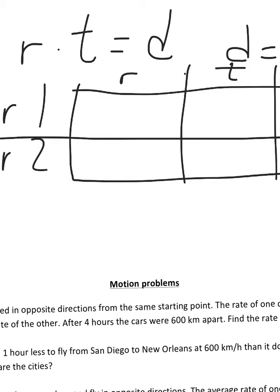So there's my table all set up. I've got car one, I've got car two, I've got rate, time, and distance in three different columns. I need to keep remembering that rate times time equals distance. So when I go to set up my equation, that's going to do it.